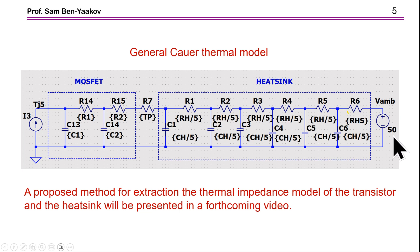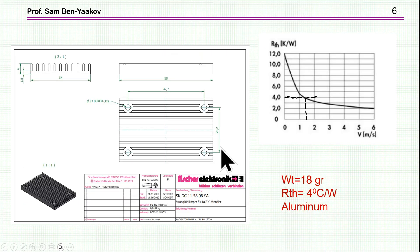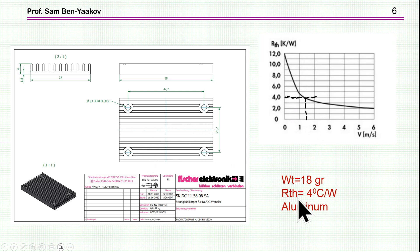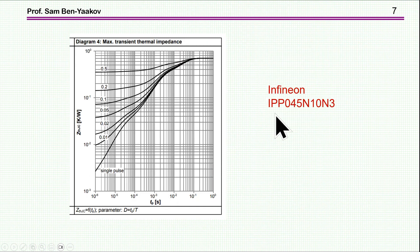I'm showing a 50°C ambient, and this will be the thermal power fed to the system. I'm going to demonstrate use of this model by considering a heatsink of about 60×60 mm, with an operating point of 4°C/W for a certain airflow. The weight of this heatsink is 18 grams, the thermal resistance is 4°C/W, and it is made of aluminum. For demonstration I'm using an Infineon power MOSFET.